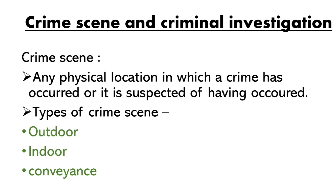It seems to be a straightforward idea, but we have an important definition here: a crime scene is any physical location in which a crime has occurred or is suspected of having occurred. So that location — whether a crime is confirmed or only suspected — is the crime scene. It doesn't need to be a house or garden; any particular place can be a crime scene.